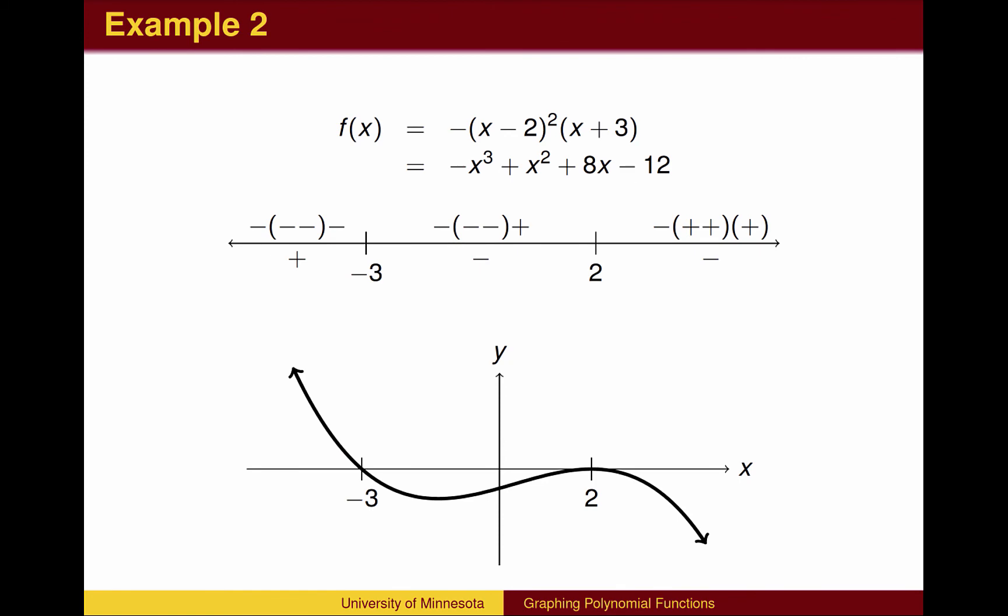We can now draw the graph starting above the x-axis, crossing below at x equals -3, through the y-intercept of -12, then to the x-intercept at 2. This time, because of the double factor, we do not cross through. In essence, the double factor causes a double switch from negative to positive, then back immediately to negative, so we finish going down.